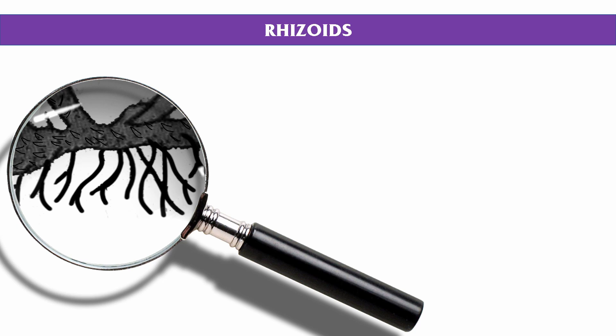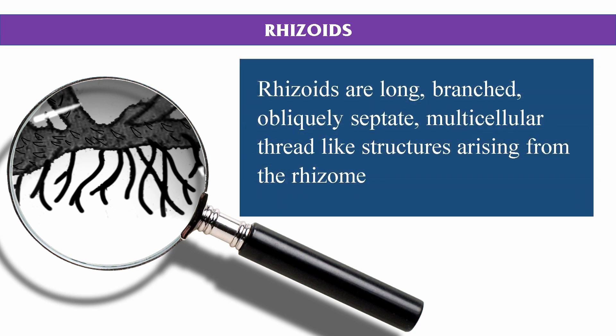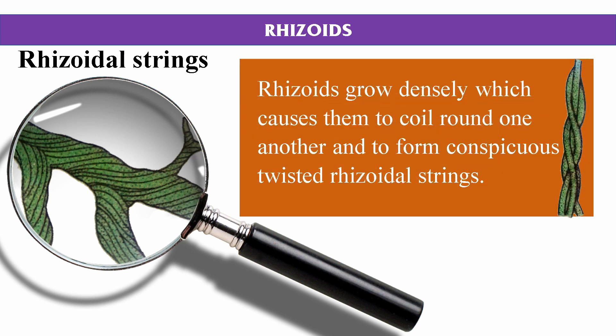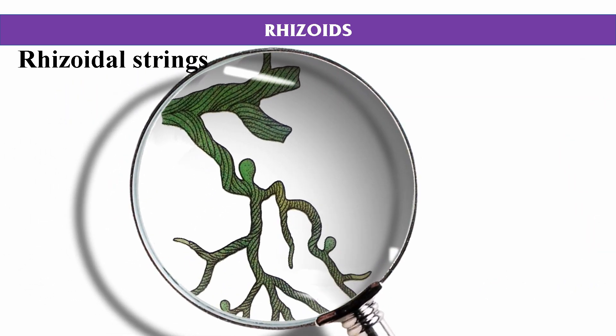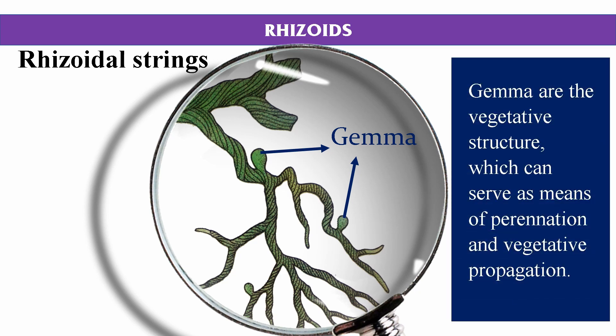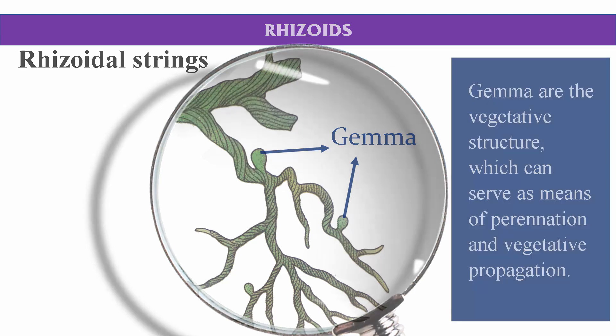Rhizoids are long, branched, obliquely septate, multicellular, thread-like structures arising from the rhizome. They grow densely, which causes them to coil around one another and to form conspicuous twisted rhizoidal strings. They help to provide anchorage and absorb water. Besides, gemmae are also produced in the rhizoids, so we can say that rhizoids also serve for vegetative propagation, or as perennating organs.